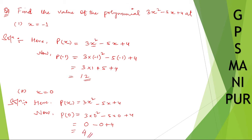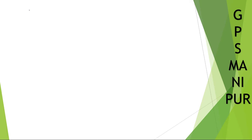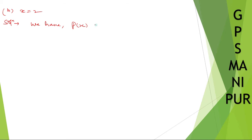Part (iii): x is equal to 2. Solution — we have p(x) equal to 3x² minus 5x plus 4. When x is equal to 2, we write p(2).